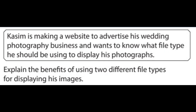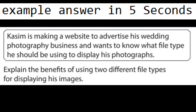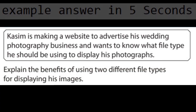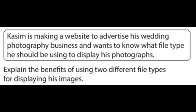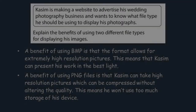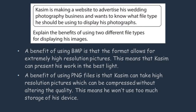In this section we're going to go over an example question on file types. The question tells us that a user wants to advertise his wedding photography business and wants to know what file types he should use for his photographs. Explain the benefits of using two different file types for displaying his images. The first one we can talk about is BMP, because the format allows for extremely high resolution pictures, meaning he can present his work in the best light. The next one is PNG — the file type will allow him to take high resolution pictures, but he can also compress the files without altering the quality, so he won't use too much storage on his device.